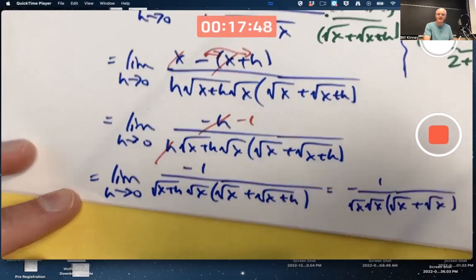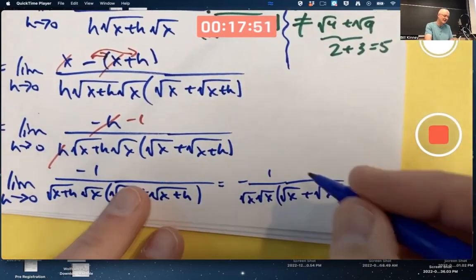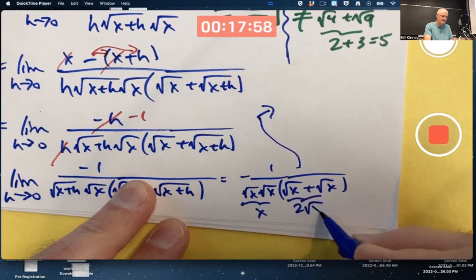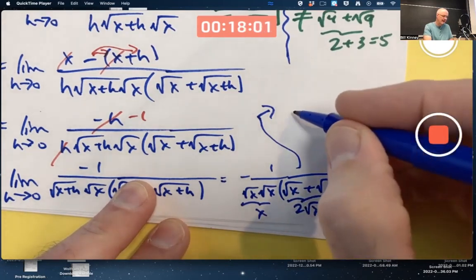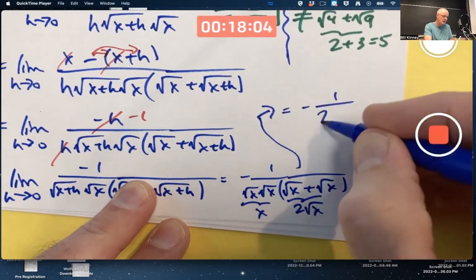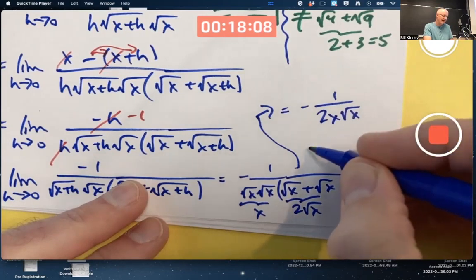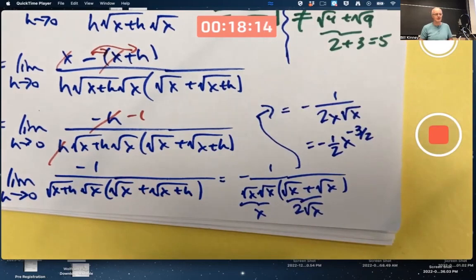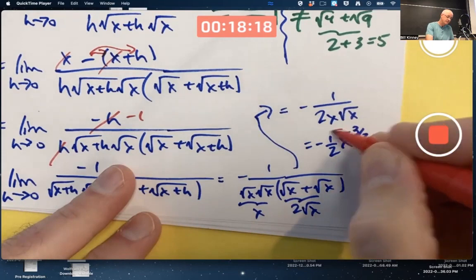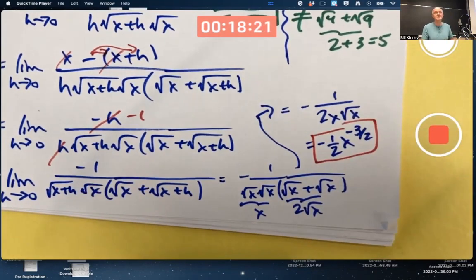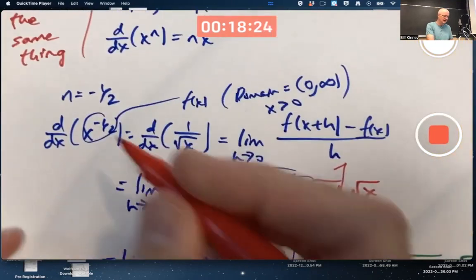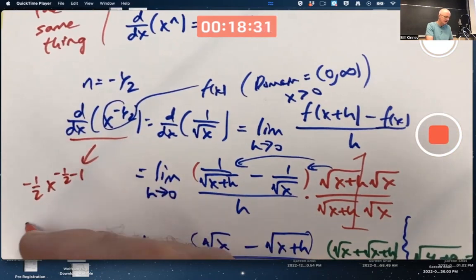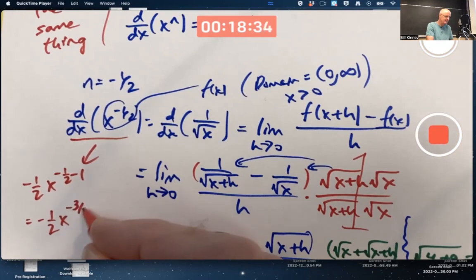Get a bunch of √x's down there. Doesn't look like it's the right answer yet, but it can be simplified. That product is x. This is 2√x. So the overall end result then is to get -1/(2x√x). That is the same as -1/2·x^(-3/2). That's the final answer. And that is what you would get with the power rule. Bring down that -1/2. Subtract 1 from the exponent. Same thing.